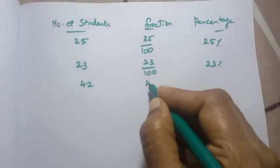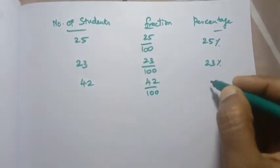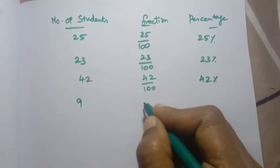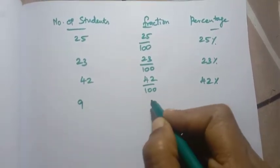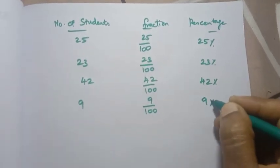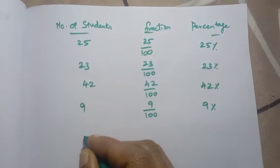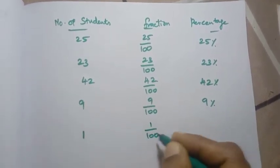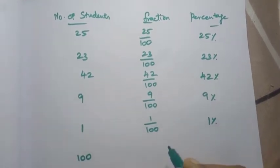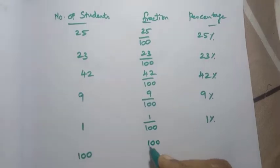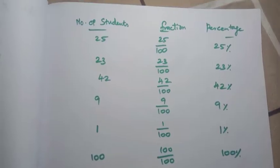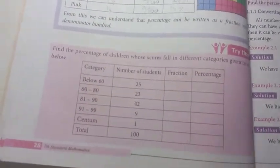Next: 42 students — 42 by 100, so 42 percent. Then 9 students — 9 by 100, 9 percent. Then centum: 1 student — 1 by 100, 1 percent. Total: 100 students, fraction 100 by 100, 100 percent. This is what you need to fill in: the fraction and then the percentage.